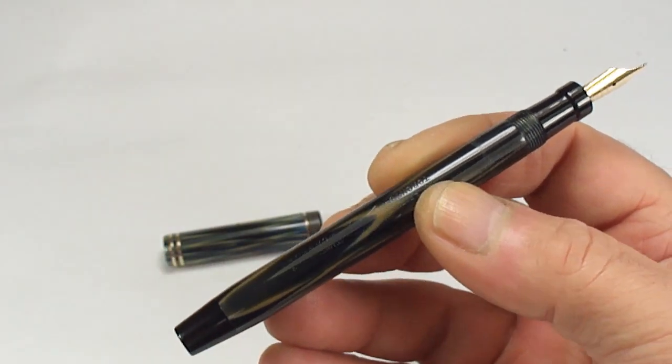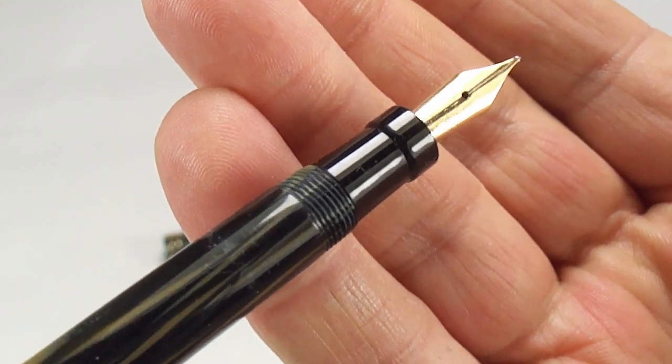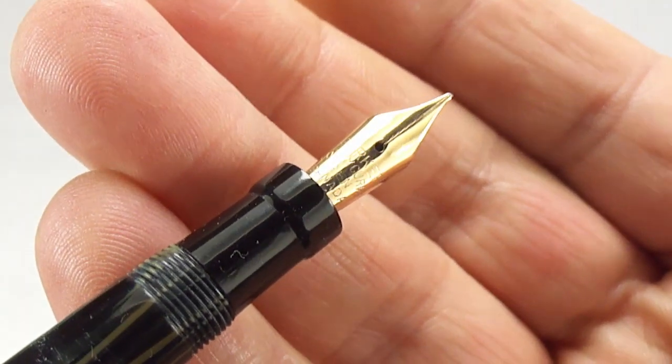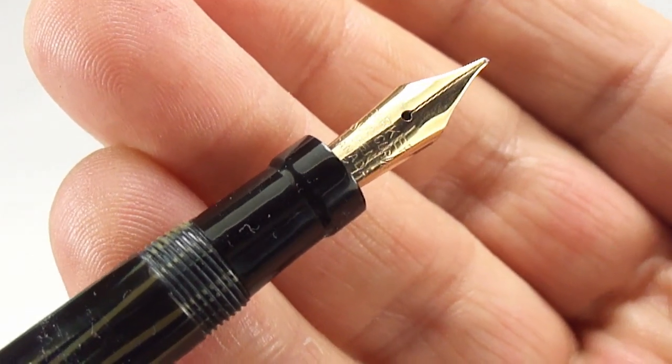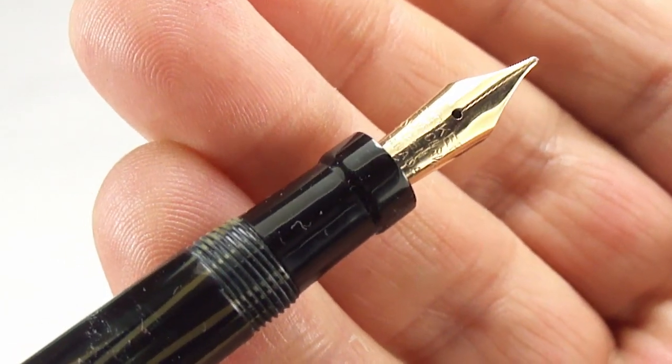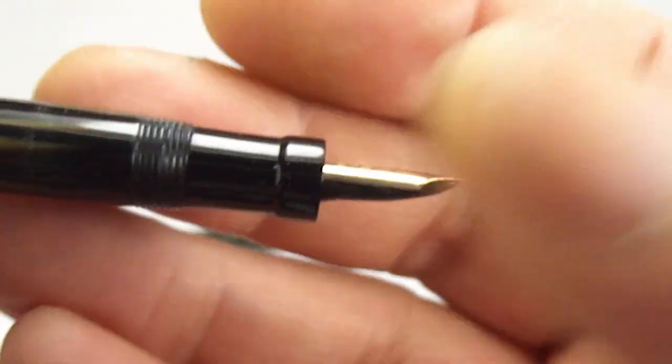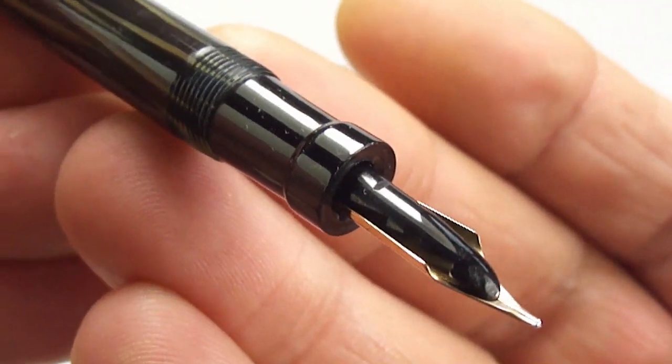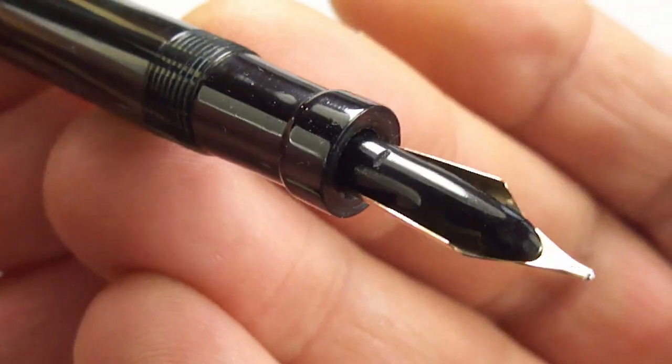Let's have a look at the nib and section. The section has this slight ridge towards the nib. The nib reads Parker Lucky Curve Pen Canada and then just at the bottom it has the number three. Let's show you the feed underneath. Because it's a Lucky Curve pen we've got the Lucky Curve Christmas tree feed underneath.